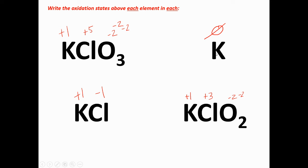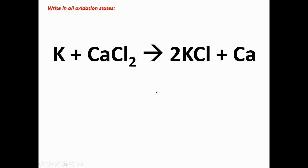Potassium on its own is a free element — charge is zero. In KCl, potassium is plus one so chlorine must be minus one. In KClO₃, potassium is plus one and three oxygens give minus six, so chlorine must be plus five for it all to add up to zero. In KClO₂, potassium is plus one and two oxygens give minus four, so chlorine must be plus three to balance the whole thing to zero.